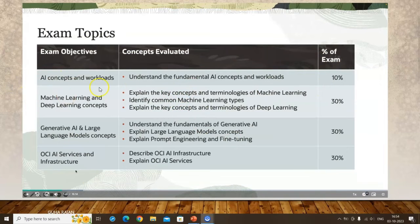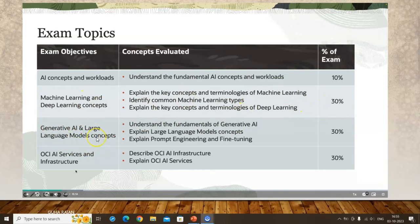In terms of exam topic weightings: AI concepts and workload is 10%, machine learning and deep learning is 30%, generative AI and large language models related to ChatGPT is 30%, and Oracle-related AI infrastructure and services is 30%. So basically around 70% of the exam is about general information on machine learning, AI, and deep learning.